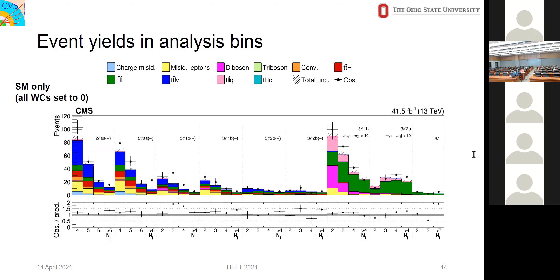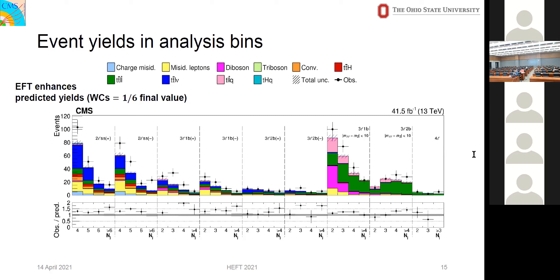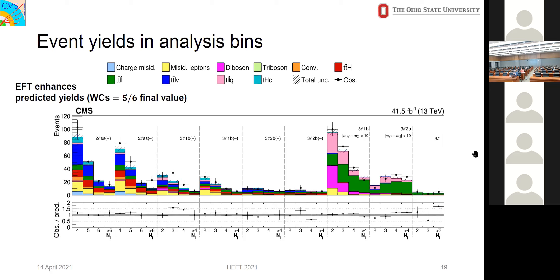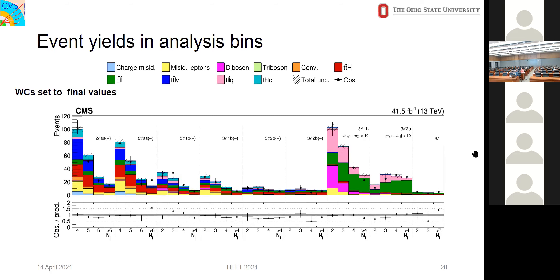Here is an example of our event yields across the 35 analysis bins at standard model only. Stepping through different values of Wilson coefficients, we see the yields change because they are parameterized by the Wilson coefficients. Setting coefficients to one-sixth of their final fit value, the yields start to go down due to interference between EFT and standard model. At four-sixths the yields start to increase again, showing enhancements. Finally, plugging all 16 Wilson coefficients to their final values, we see very good agreement between the data and Monte Carlo.